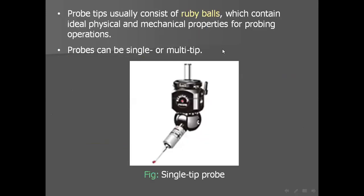Probe tips usually consist of ruby balls, which contain ideal physical and mechanical properties for probing operations. The probe should not be too flexible — if it is too flexible, the probe will distort and recordings will be inaccurate. Wear is also undesirable. Ruby balls have the required hardness and other characteristics, making them the most common material used for probe tips. Probe tips can be either single tip or multi-tip.